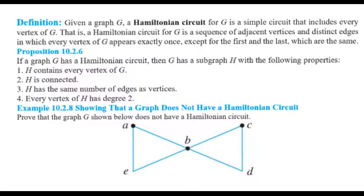We present a proposition that is very helpful for proving that a graph does not have a Hamiltonian circuit. If graph G has a Hamiltonian circuit, then G has a subgraph H satisfying four conditions: first, H contains every vertex of G; second, H is connected; third, H has the same number of edges as vertices; and fourth, every vertex of H has degree two.